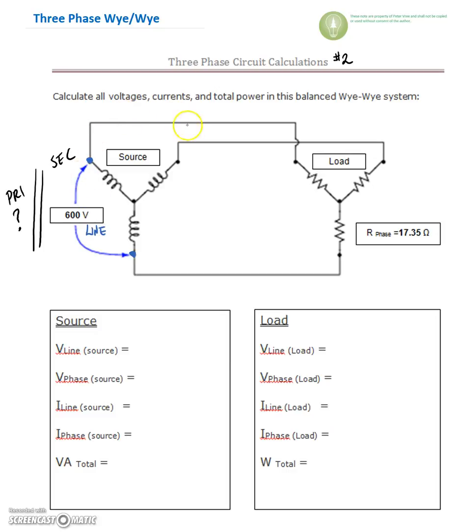If we keep taking that voltage out, then we can see that our voltage on the outside of the circuit is 600 volts, and that's our line voltage.